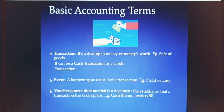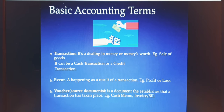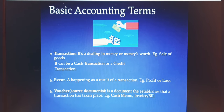The first basic accounting term is 'transaction' — it is a dealing in money or money's worth. For example, the sale of goods. It can be a cash transaction or a credit transaction. A transaction is whenever there is a change in the hands of money, giving or receiving money. Any change in the financial position of the business — money coming in or going out — must be recorded, and that is called a transaction.